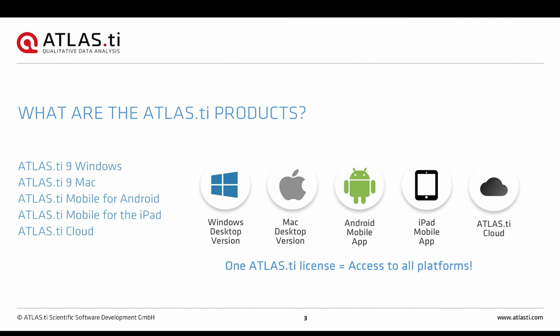We also have a mobile app version for tablets like Android tablets or iPads. You can always download this app for free, whether or not you already have a license. This can be useful if you're out in the field collecting data and want to start putting your project together. We also have an online version called Atlas TI Cloud, where you don't need to download any software — just a computer with an internet connection to log in and continue analyzing your data. Any project created in Atlas TI Cloud or the mobile app can be exported and opened in the desktop version.